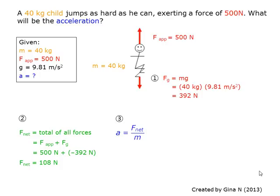Finally, the acceleration is found in blue by using the formula A equals the net force divided by the mass. We substitute in the values and get the answer A equals 2.7 m per second squared.